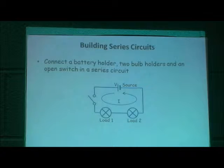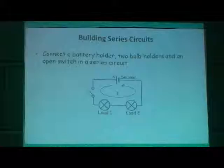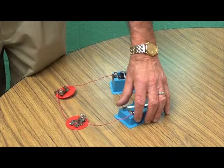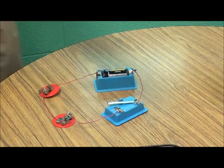In building a series circuit, we connect a battery, two bulb holders, and an open switch. When we close the switch, the bulbs are on very dimly. Using only a one-and-a-half volt battery, compared to just one bulb, two bulbs in series are much dimmer — and that's what students will observe.